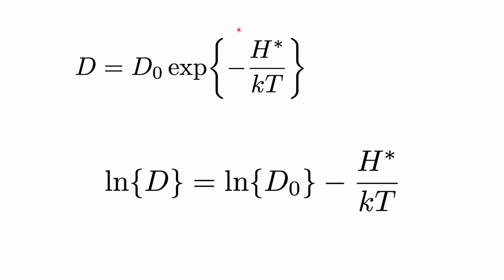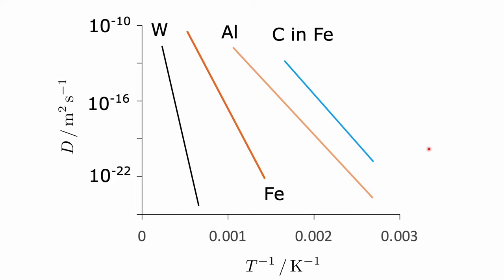If I take the logarithm of this equation, I get a relationship between the log of the diffusion coefficient and the inverse of temperature. If I plot log D versus 1/T, I should get a straight line with a negative slope. And that is exactly what we see in practice — plotting the diffusion coefficient on a logarithmic scale against inverse temperature gives straight lines for, for example, tungsten atoms in tungsten, carbon and iron atoms in iron, and carbon in iron — all straight lines with negative slopes as expected.